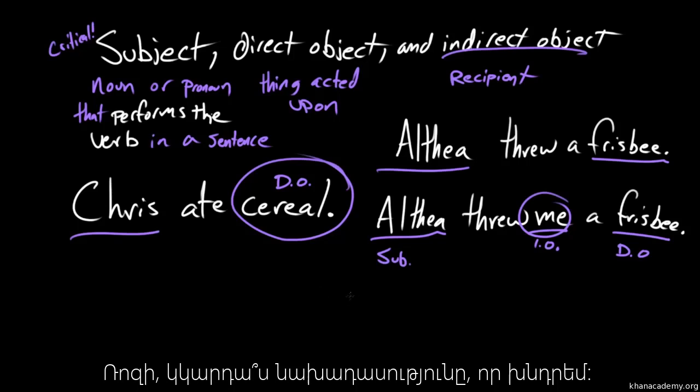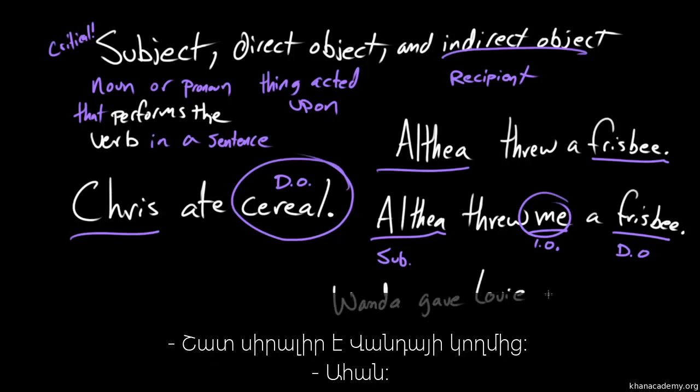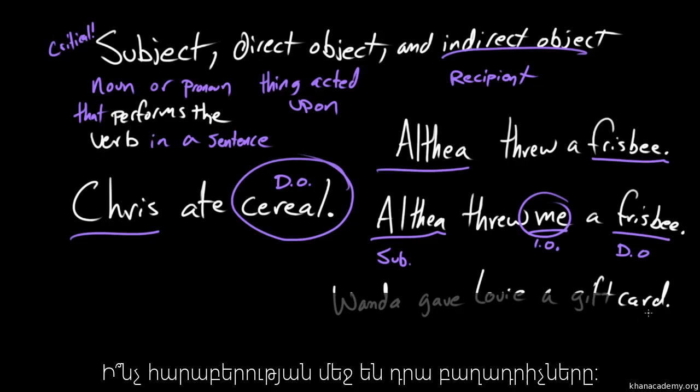Rosie, would you read me this sentence, please? Wanda gave Louis a gift card. That's very nice of her. Yeah. So, okay, so walk me through this then. What is going on in this sentence? What are the relationships between the components of this sentence?